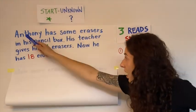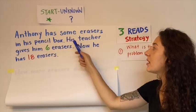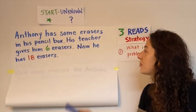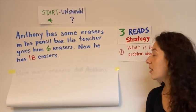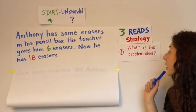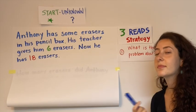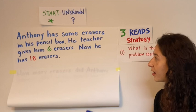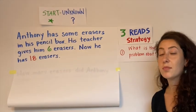Let's try. Read with me. Anthony has some erasers in his pencil box. His teacher gives him six erasers. Now he has 18 erasers. So what is this problem about? Take your time and think. Yes, this problem is about Anthony and his erasers in this pencil box and we want to figure out how much he started with.